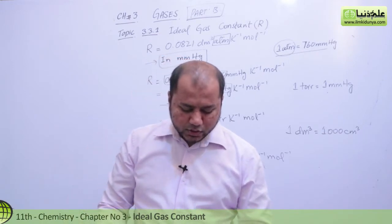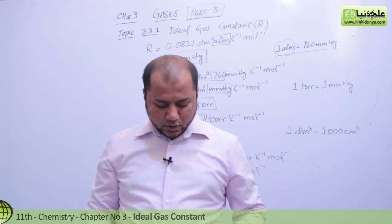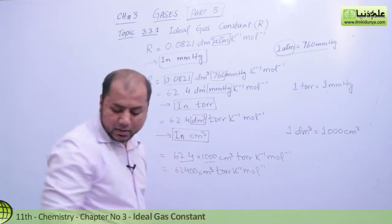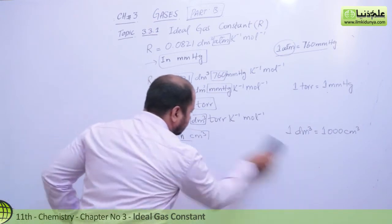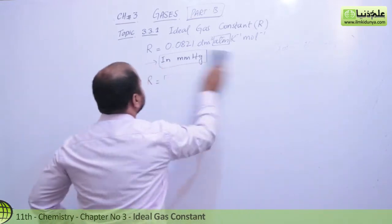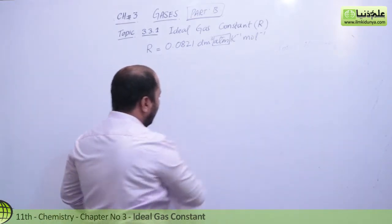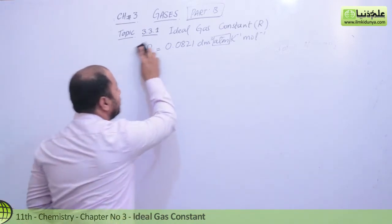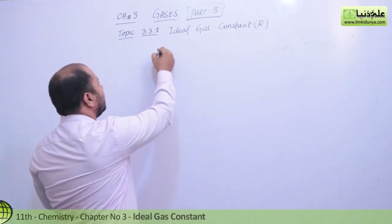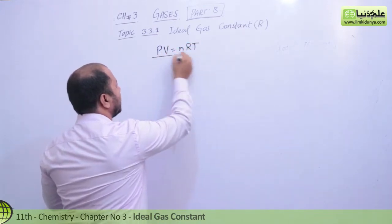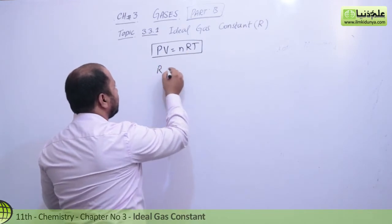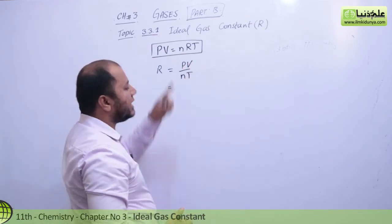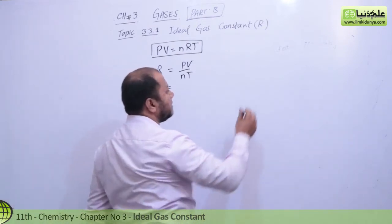So let's think more about it — we can also convert R into Newton per meter square. I don't think it's a difficult task; let me quickly show you. I don't want ATM here; I want Newton per meter square. Now remember: the general gas equation is PV = nRT, and from this we can drive R as PV over nT. The pressure we need to take is in Newton per meter square.